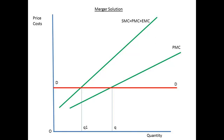What happens in a situation where one firm produces, or imposes, an external cost on another? A possible solution is to merge two firms. Before a merger, firm A produces quantity Q. After the merger, to take account of the external marginal costs, the new supply curve becomes SMC. The new quantity produced will be Q1. The reduction will take into account the external marginal costs, but it will also allow profit maximisation, since the marginal cost curve cuts the demand curve from below at the point where Q is the quantity produced.